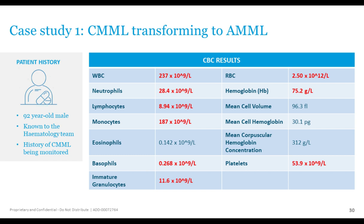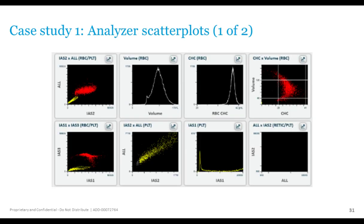Moving to case one: a chronic myelomonocytic leukemia beginning to transform into an acute myelomonocytic leukemia. Abnormal results include a very high white count, low hemoglobin, low platelet count, and a high immature granulocyte count of 11.6. The scatter plots show red cell plots in red and platelet scatterplots in yellow. Looking at the scatterplots helps form an expectation for what the blood film will show — this is part of the art of morphology.